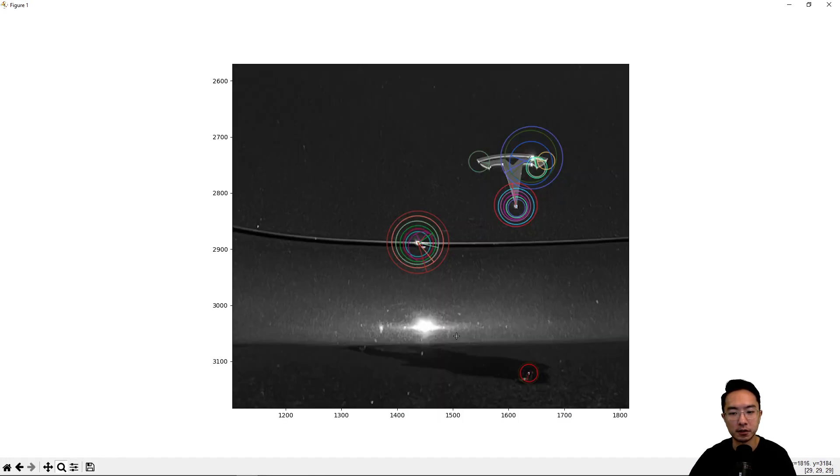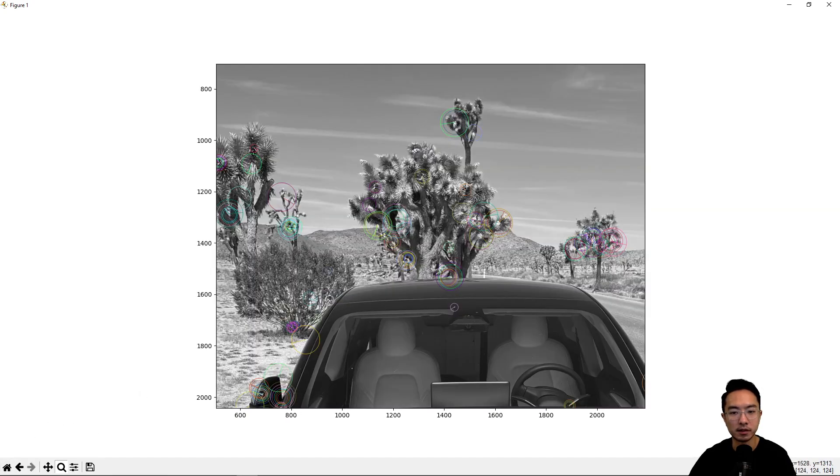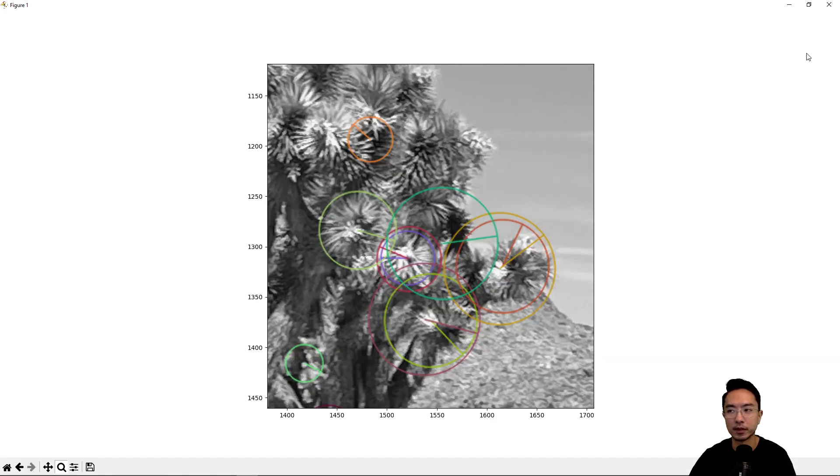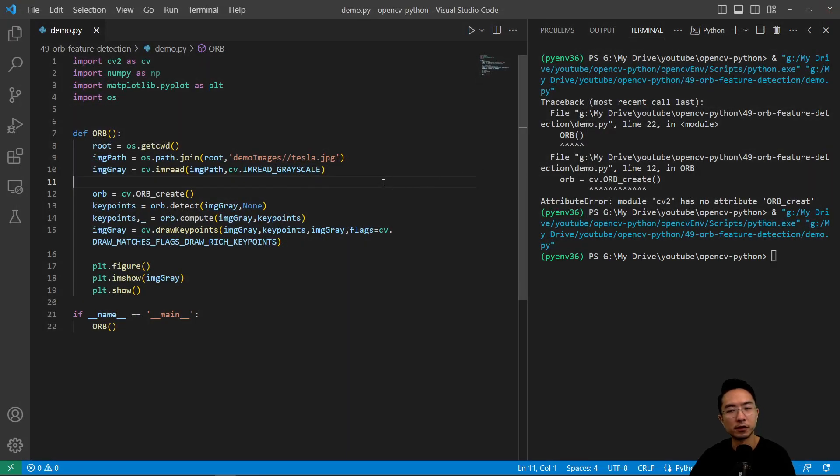But yeah, you can see the features are shown here. And if we zoom into different parts of the trees, you can see some features are showing up. Okay, so if you found this video helpful, give a like and subscribe, and I'll see you in the next one.